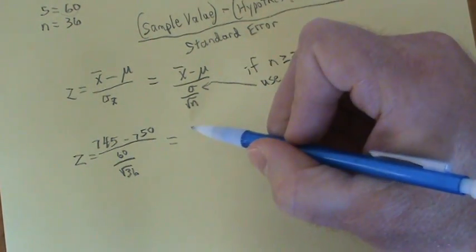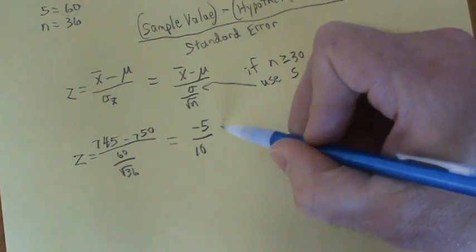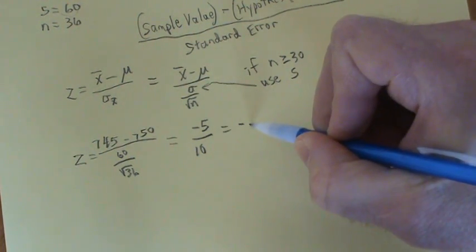If you do these calculations, the numerator becomes a negative 5, the denominator becomes a 10—you can do that on a calculator—which equals exactly in this case negative 0.5.